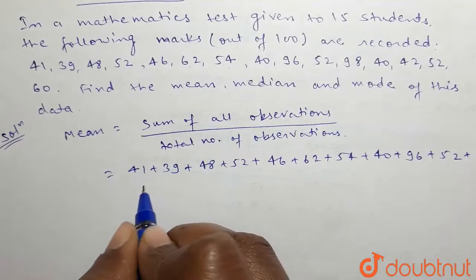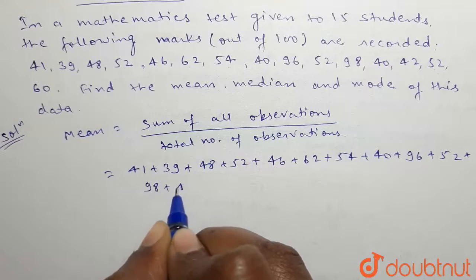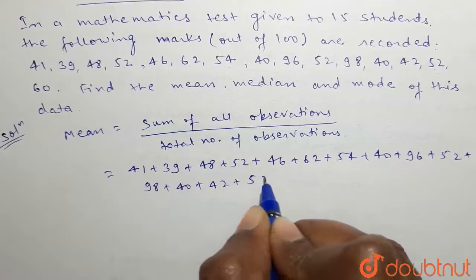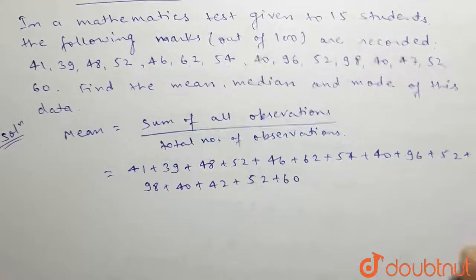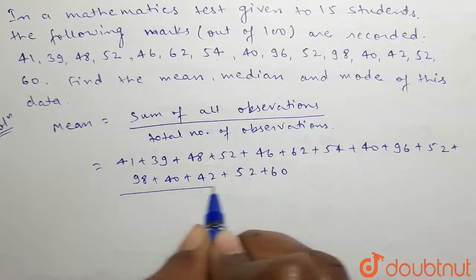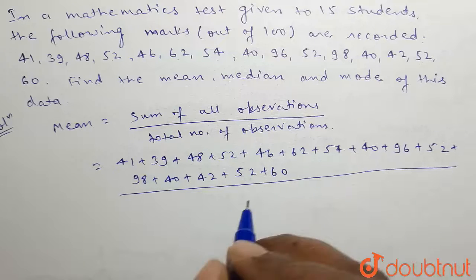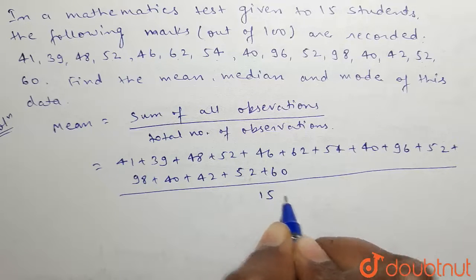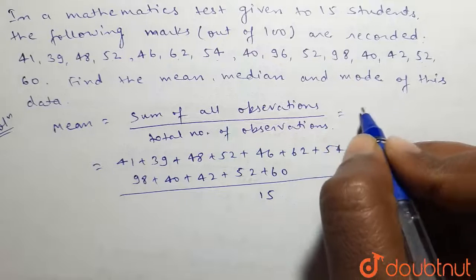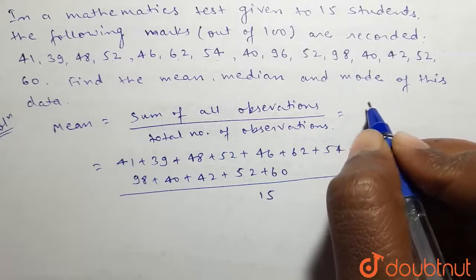Plus 98 + 40 + 42 + 52 + 60, all divided by total number of observations. The total number of observations is 15.